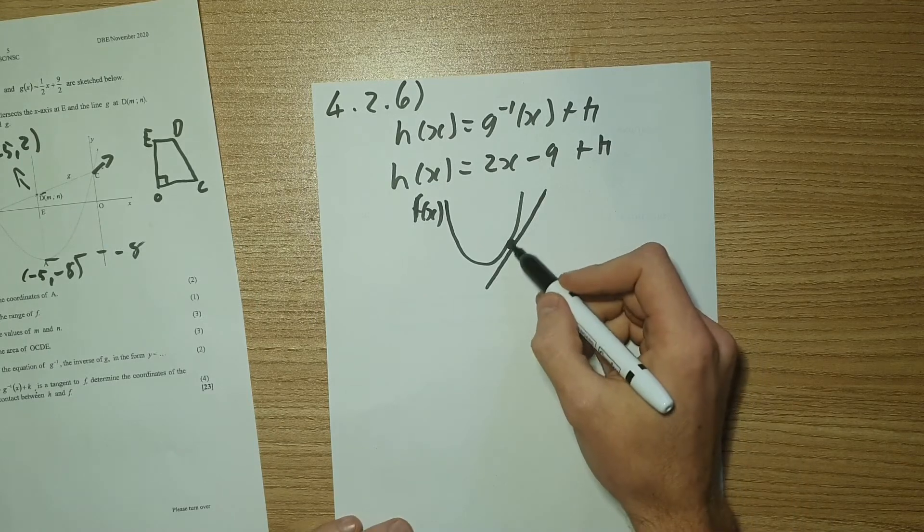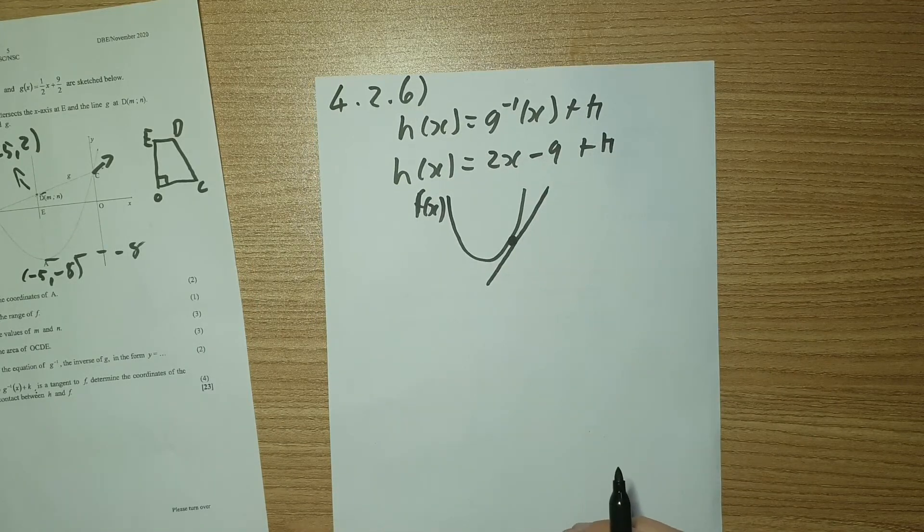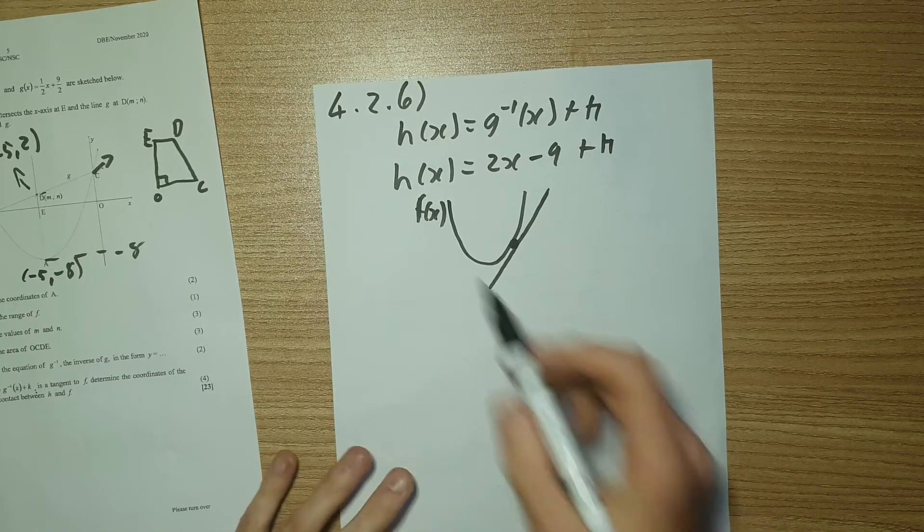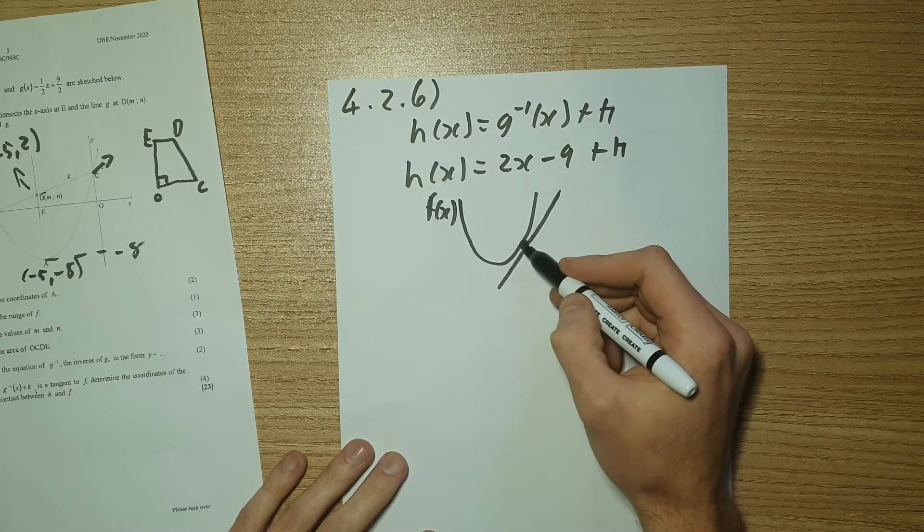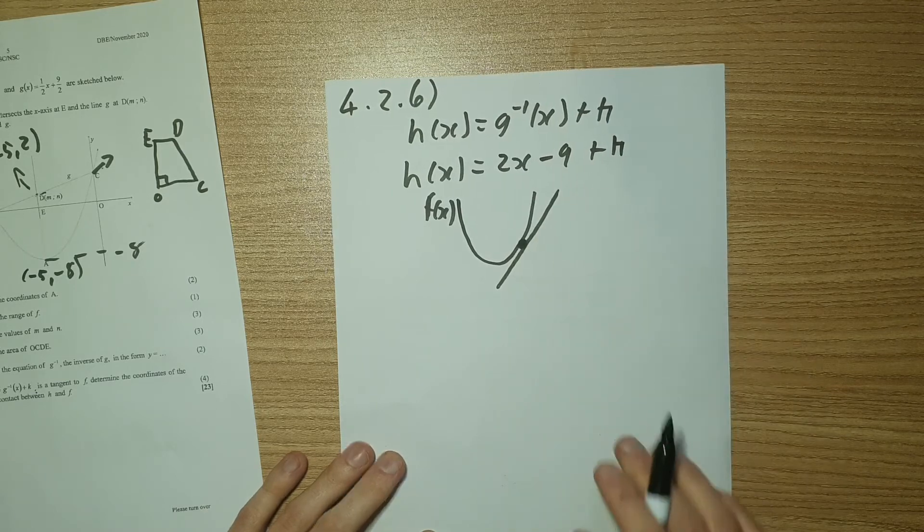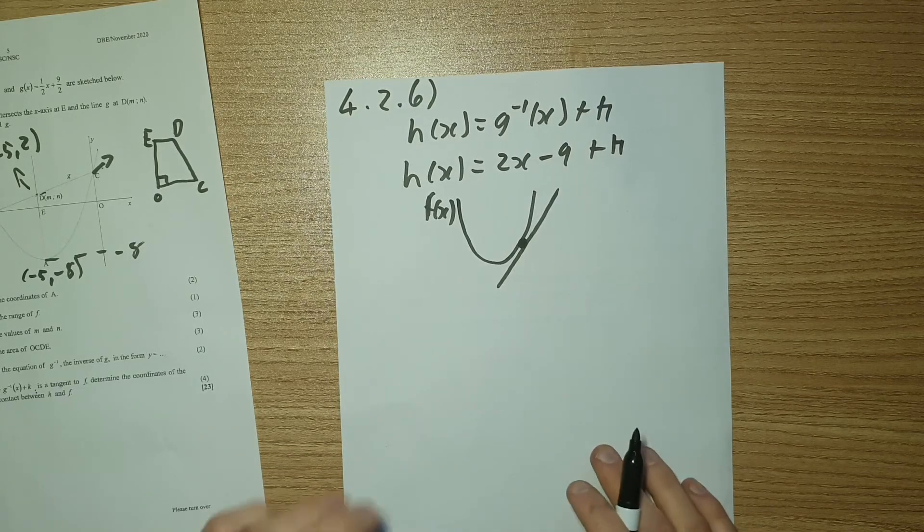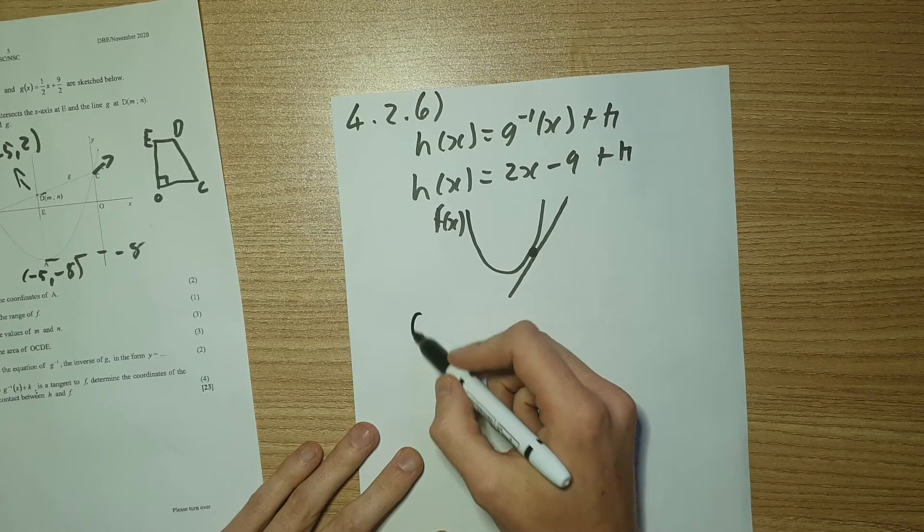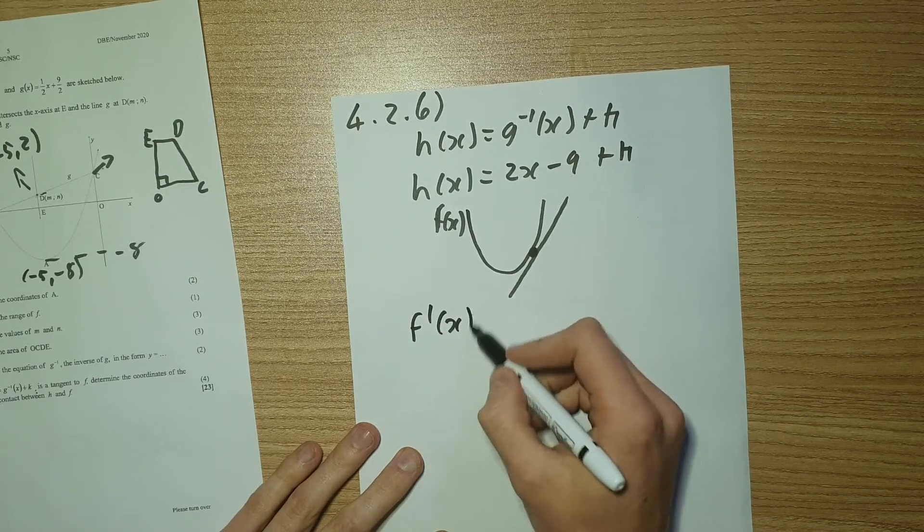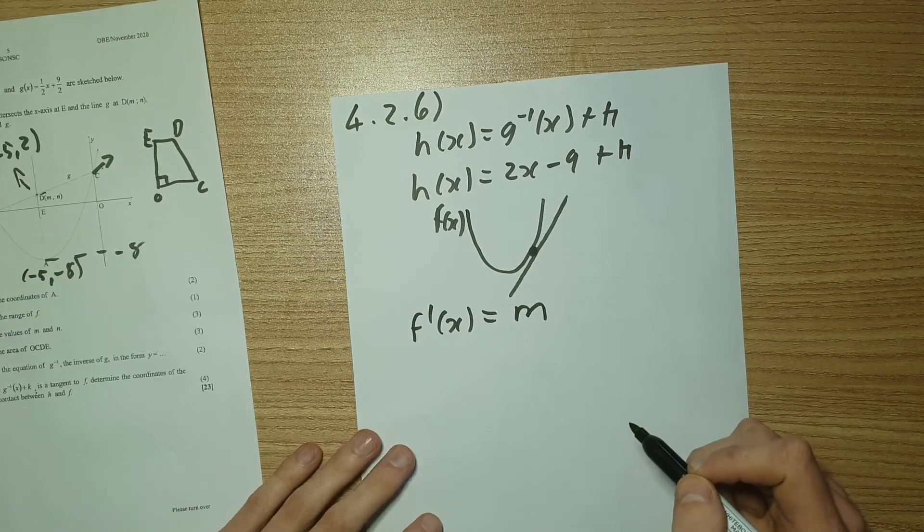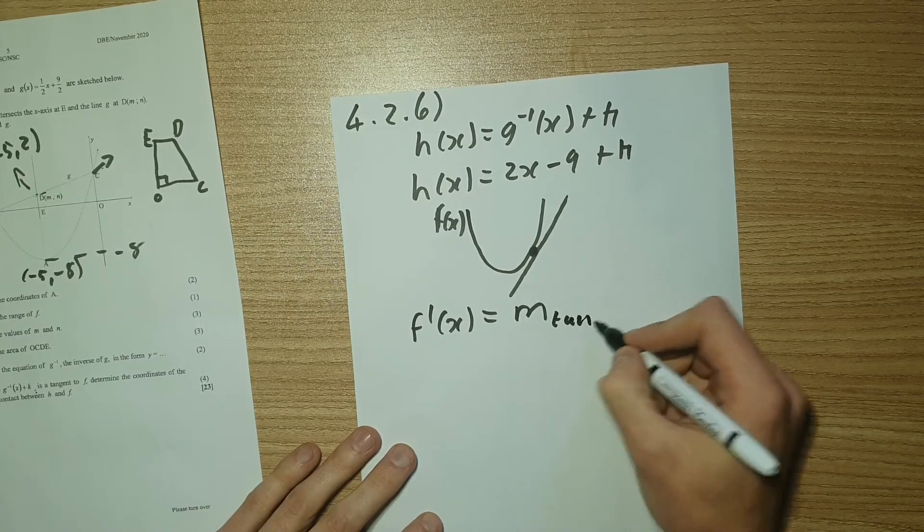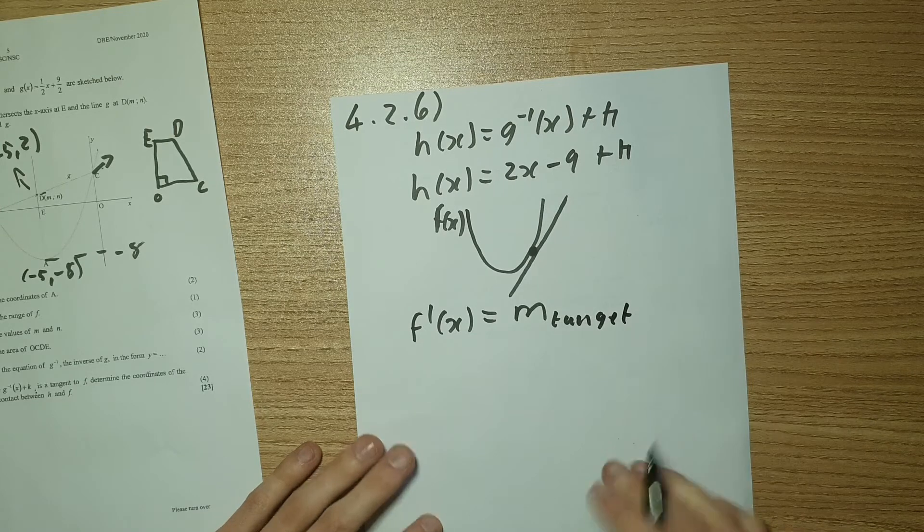So we've now learned that in calculus, the tangent can be found using our derivative of the function given. So F of X, we can find the derivative. And then at that point, we can use that to find our tangent line. So what it says is, F prime of X is equal to my gradient of my tangent line. So that's M for tangent.